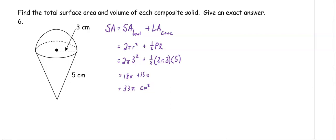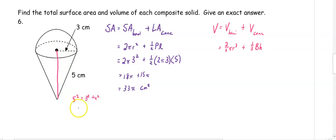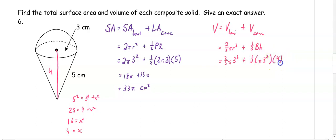For volume, it's easier because we're dealing with the exact shapes we have: the volume of the hemisphere plus the volume of the cone. The volume of the hemisphere is 2/3πr³, and the volume of the cone is 1/3 times base area times height. Before substituting, we need the height of the cone using the Pythagorean theorem: 5² = 3² + x², so 25 = 9 + x², giving x = 4. So we have 2/3π(3³) plus 1/3π(3²)(4), which gives us 18π plus 12π, so the volume is 30π centimeters cubed.